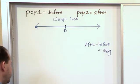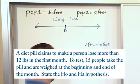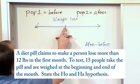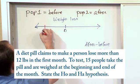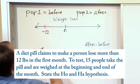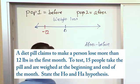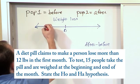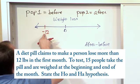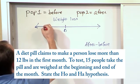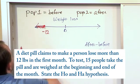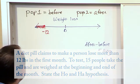So what this problem is really stating—it says diet pill claims to make a person lose more than 12 pounds in the first month. So if we go down here, somewhere over here is negative 12, and this particular weight loss guy is basically saying that we're going to not only make you lose 12 pounds, but maybe even more than that. So we can shade to the left over here. I want to draw it graphically because...